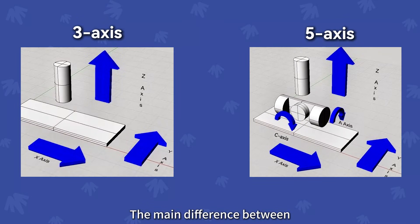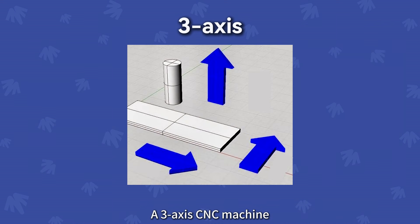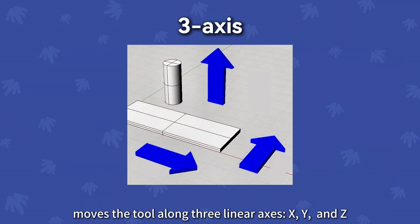The main difference between 3X and 5X CNC machines lies in the number of axes. A 3X CNC machine moves the tool along three axes: X, Y, and Z.